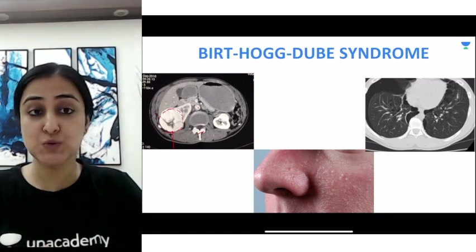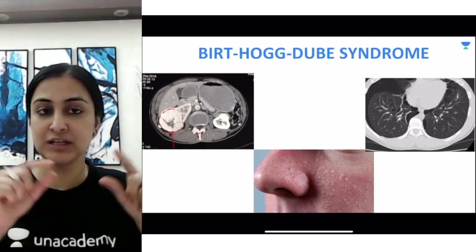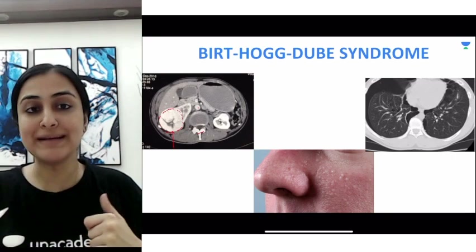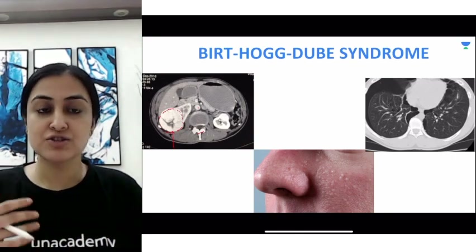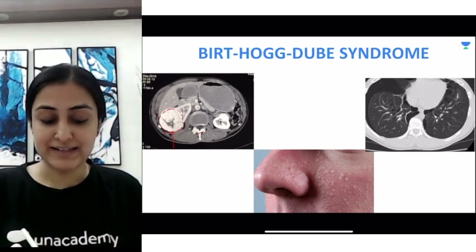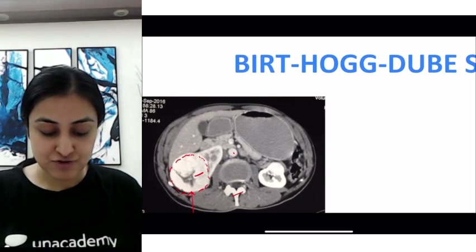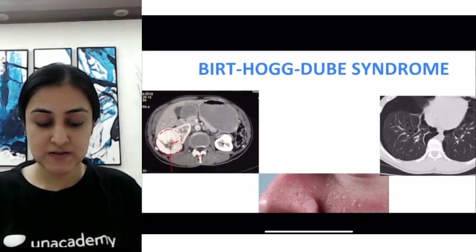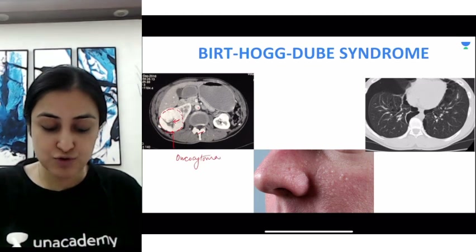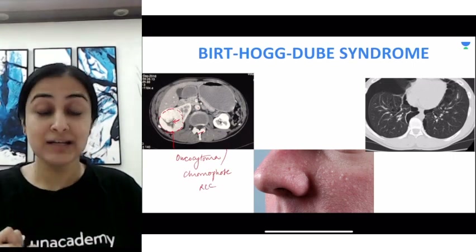Kidney lesions are divided into ball type and beam type depending on morphology. A rounded mass is a ball-type lesion; when it infiltrates and the reniform shape of the kidney is maintained, that is a beam-type lesion — the prototype being transitional cell carcinoma. Here we are seeing a ball-type, well-defined enhancing lesion in the kidney, and the main feature is a central scar.